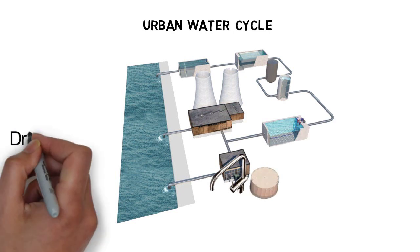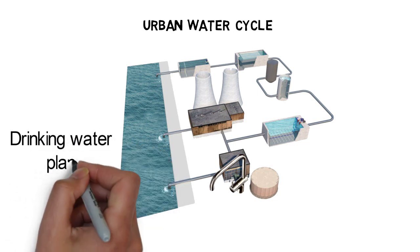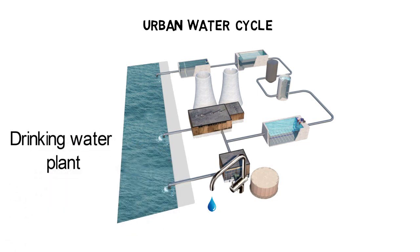In the urban water cycle, water is treated in a drinking water plant before it is distributed through pipelines to our taps.